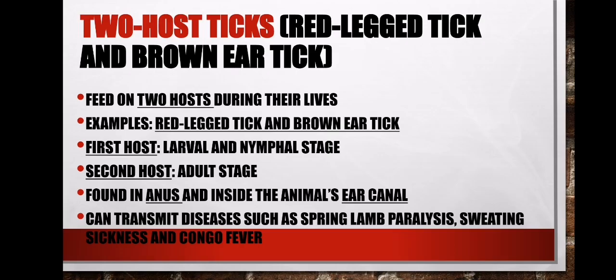Two-host ticks require two hosts to complete their life cycle. Examples are the red legged tick and the brown ear tick. They feed on two hosts during their life — the first host for the larval and nymph stages, the second for the adult stage. They like to attack the anus and the ear canal. They can also transmit spring lamb paralysis.